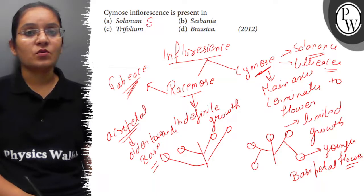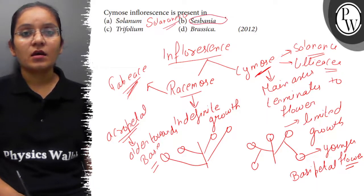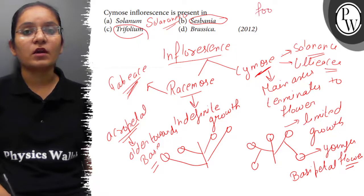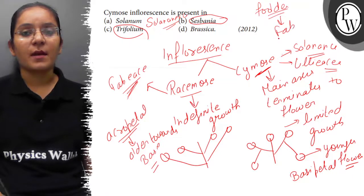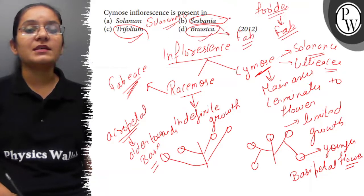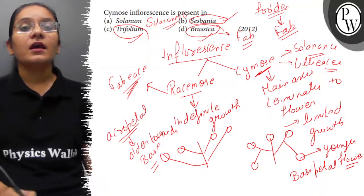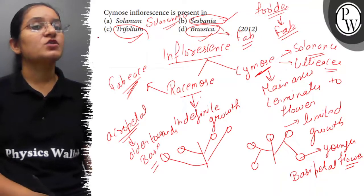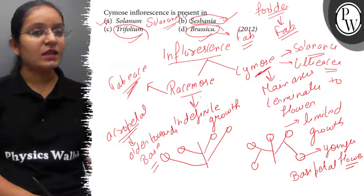Solanum belongs to solanaceae family. Sesbania and Trifolium, these two are fodder crops and belong to fabaceae family, and Brassica also belongs to fabaceae family. This means Trifolium, Brassica and Sesbania have racemose type of inflorescence and Solanum has cymose type of inflorescence. So the correct answer here is option A. Thank you.